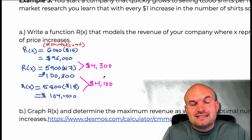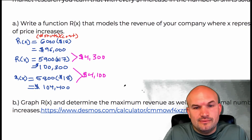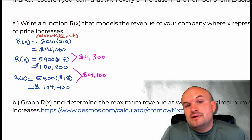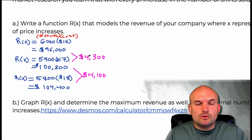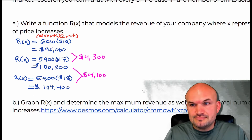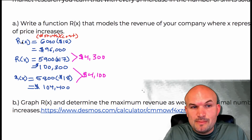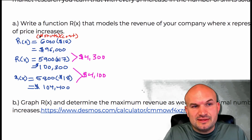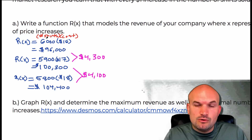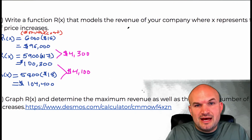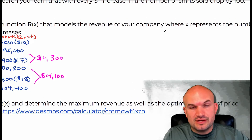Our model needs to help us maximize the revenue. Right now we just want to represent this function. R of X represents the revenue, and X represents the number of price increases. R of X is basically the number of shirts that you're going to sell times their price. So we're basically multiplying them to get the revenue. When we create this model, we will have a product of shirts times price, where X represents the number of price increases.